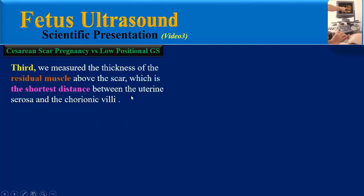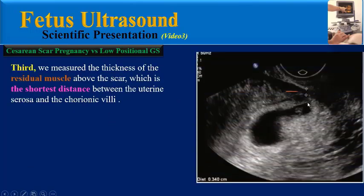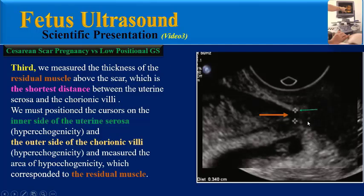In the third step, we measure the thickness of the residual muscle above the scar, which is the shortest distance between the uterine serosa and the chorionic villi. We must position the calipers on the inner side of the uterine serosa, which is hyperechoic, and the outer side of the chorionic villi, which is also hyperechoic. We then measure this area between the two hyperechoic lines, which is the residual muscle.